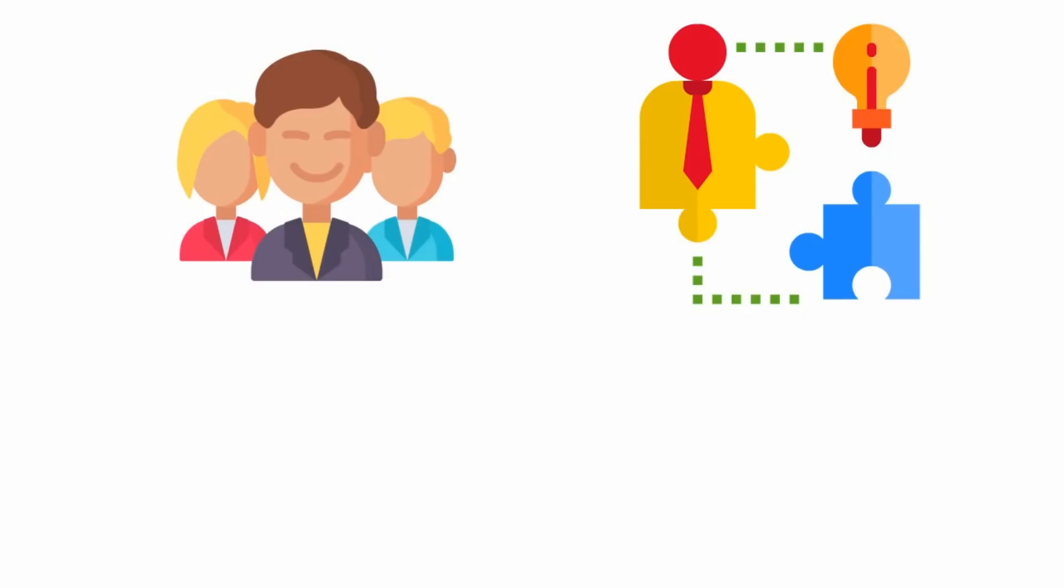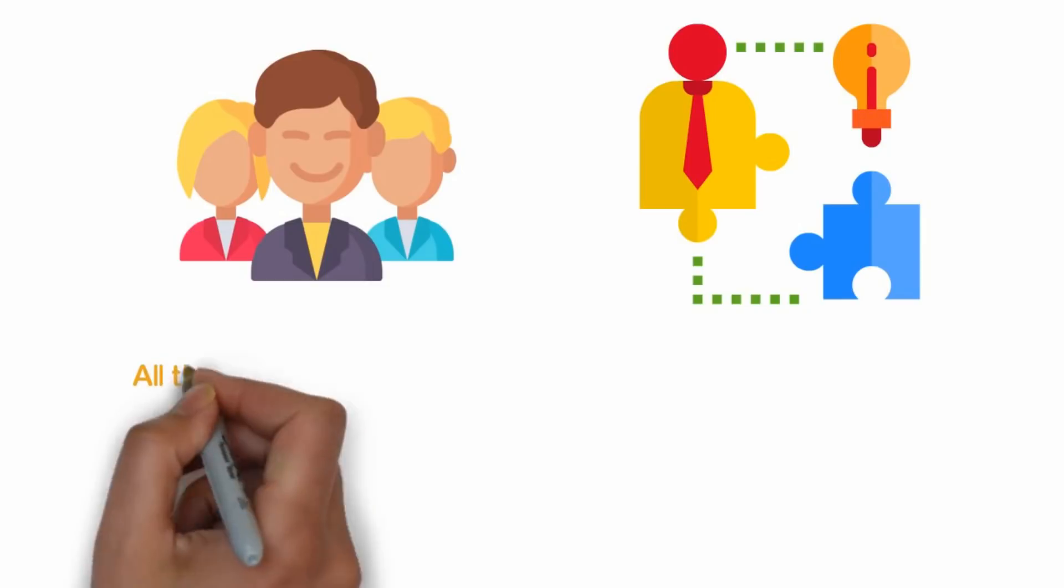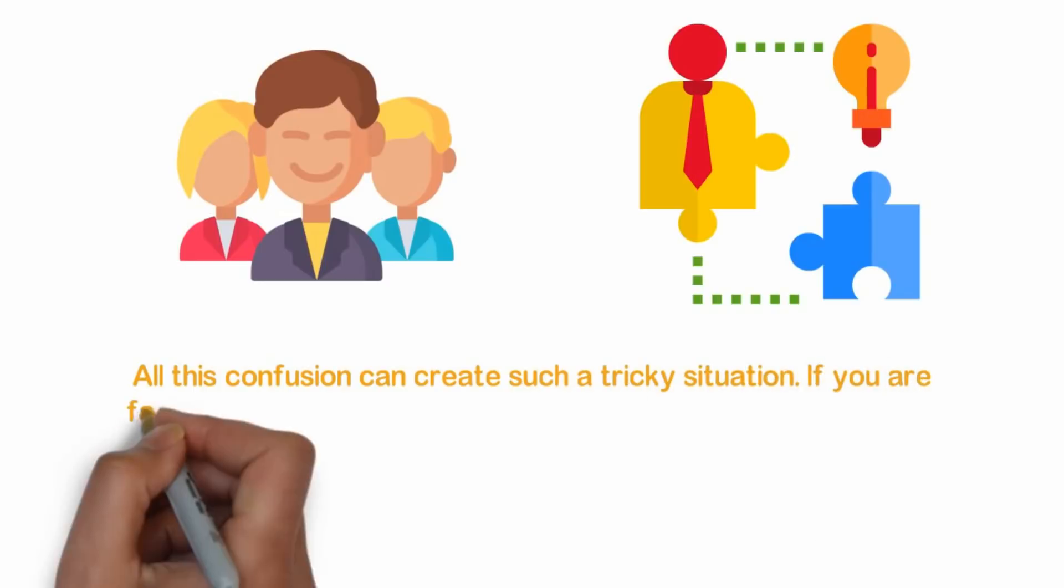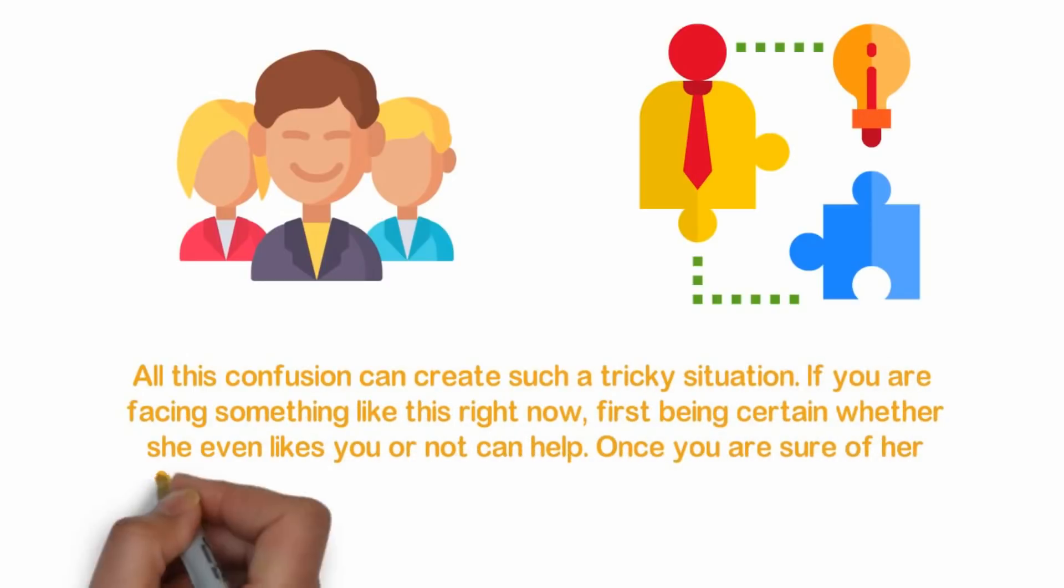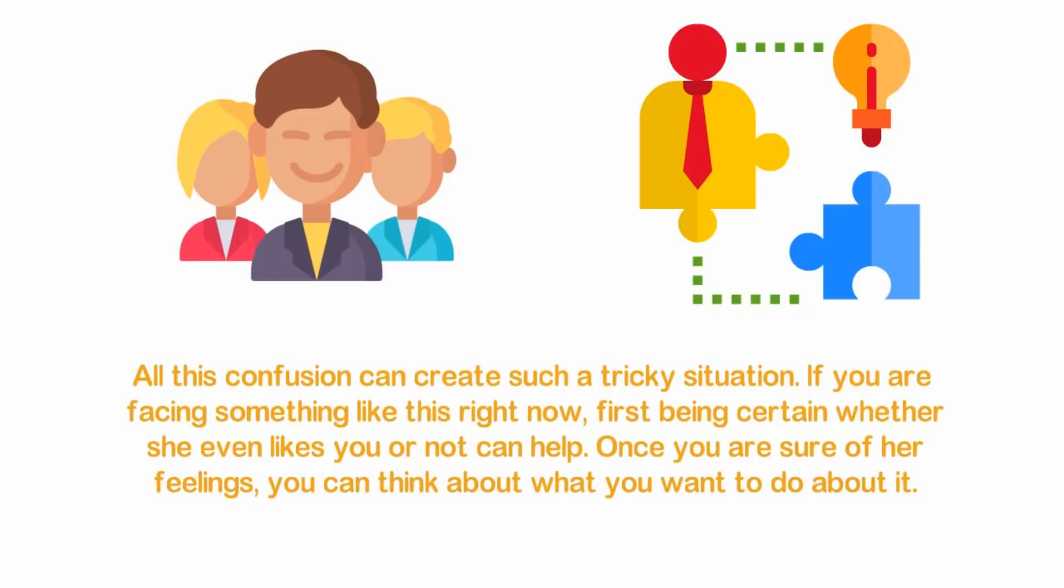All this confusion can create such a tricky situation. If you are facing something like this right now, first, being certain whether she even likes you or not can help. Once you are sure of her feelings, you can think about what you want to do about it.